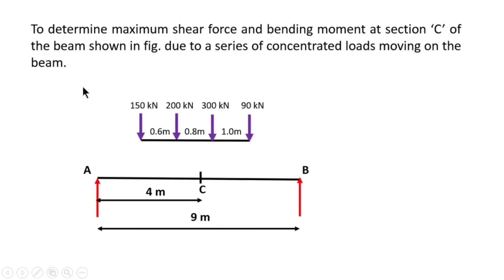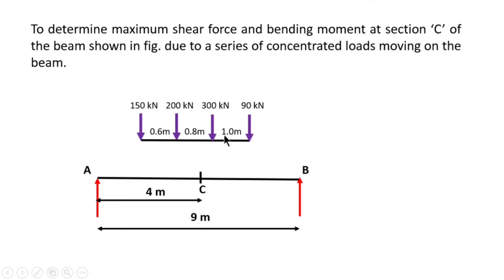Now this is our numerical problem: to determine maximum shear force and bending moment at section C. Section C is 4 meters from the left support of the beam, due to the series of concentrated loads moving on the beam. The series of concentrated loads are 90 kN, 300 kN, 200 kN, and 150 kN, spaced at 1 meter, 0.8 meter, and 0.6 meter apart.